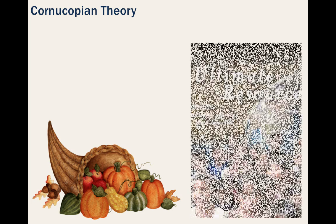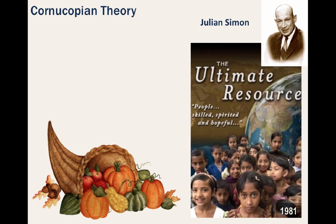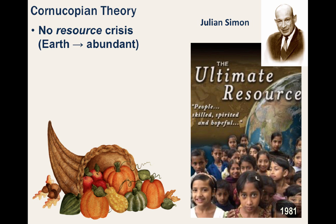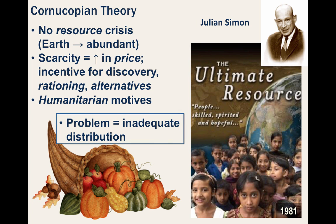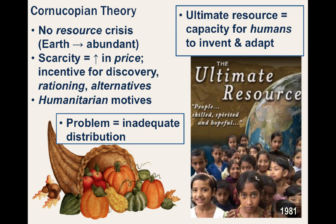Then there was the cornucopian theory, which was somewhat based on The Ultimate Resource, a 1981 book written by Julian Lincoln Simon. The basic premise is there is no resource crisis, and there is an abundance with regard to food, fuel, etc. As a particular resource becomes more scarce, its price rises. This rise in price creates an incentive for people to discover more of the resource, ration it, or eventually develop substitutes. There are also humanitarian incentives in wanting to help those in need. The problem isn't that there aren't enough resources — it's a matter of adequate distribution. The populations in rich countries have plenty, while those in poorer countries have a deficit. Therefore, the ultimate resource is not any particular physical object, but the capacity for humans to invent and adapt.